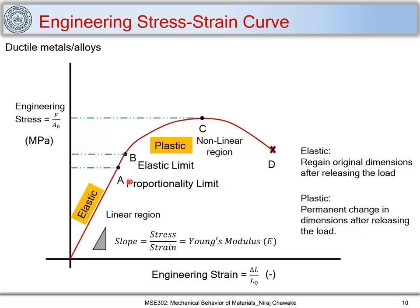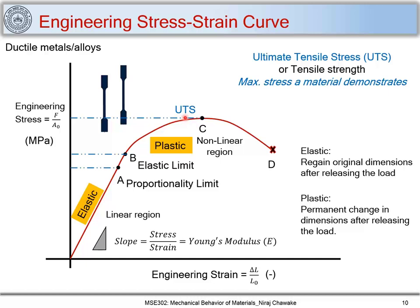Point A is called the proportionality limit and point B is the elastic limit. The slope of the linear elastic region is Young's modulus, equal to stress divided by strain. Point C represents the maximum stress the material can withstand, called UTS — Ultimate Tensile Strength. From point B to point C, the elongation delta L increases uniformly while the cross-section area changes uniformly.